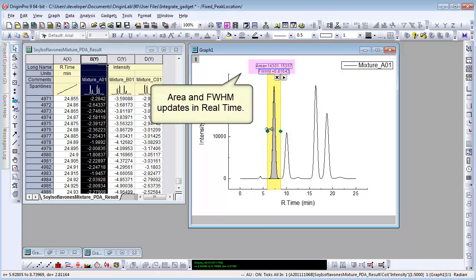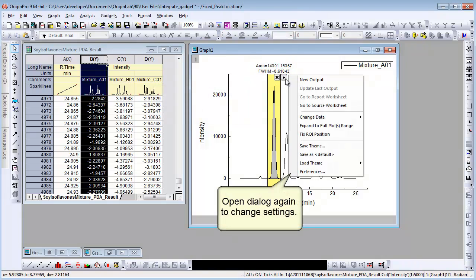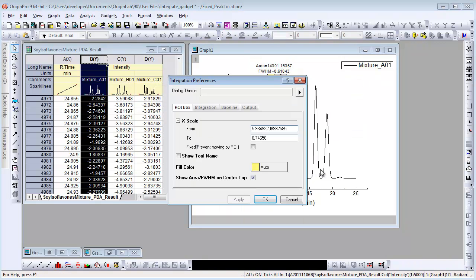We can click the arrow and choose Preferences to open the dialog again to change settings. Let's fine-tune the region of interest to some round values, for example from 6 to 8.5.